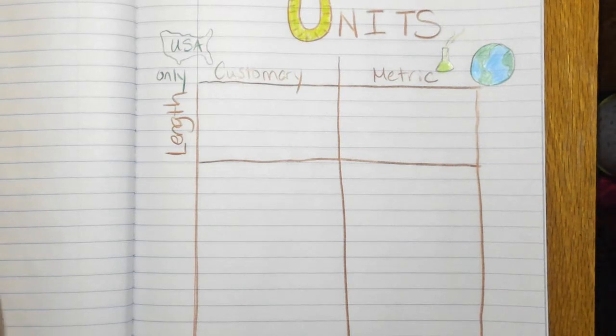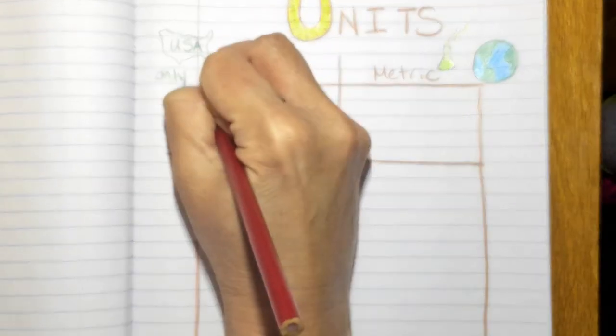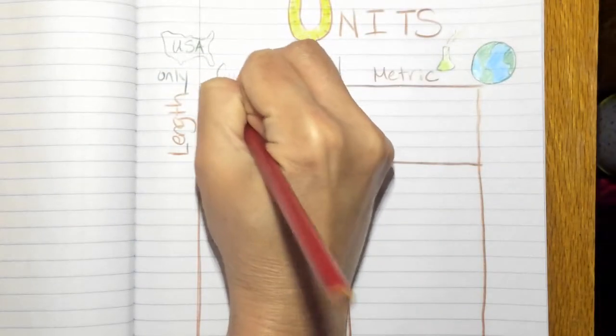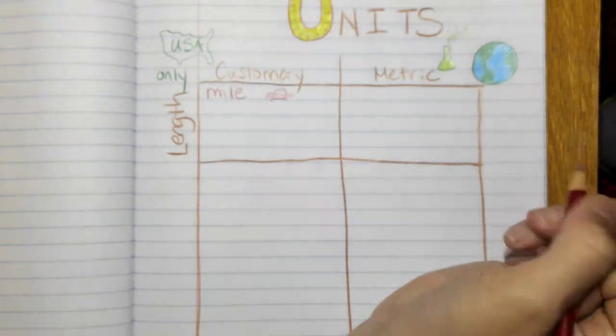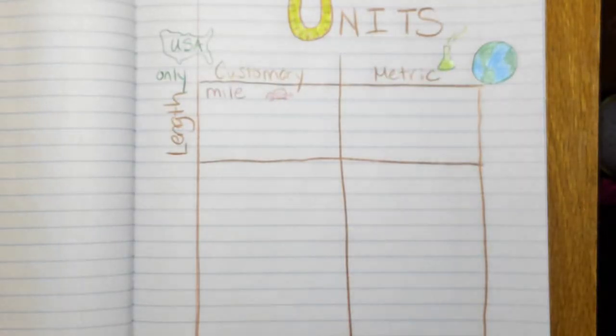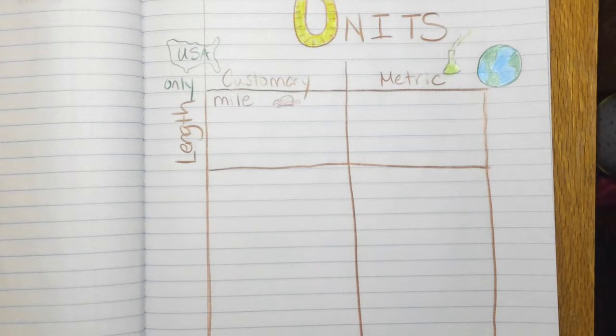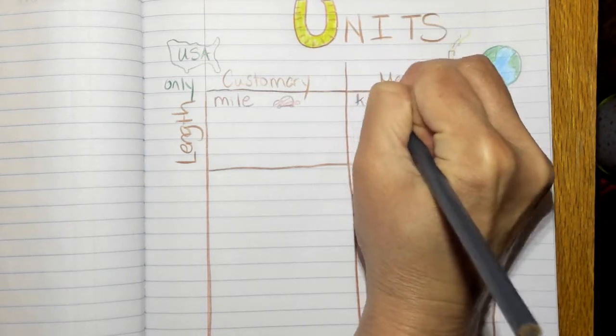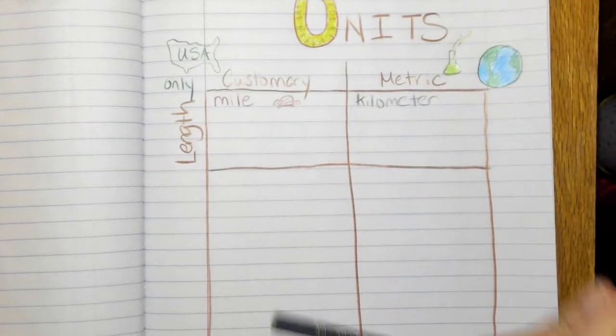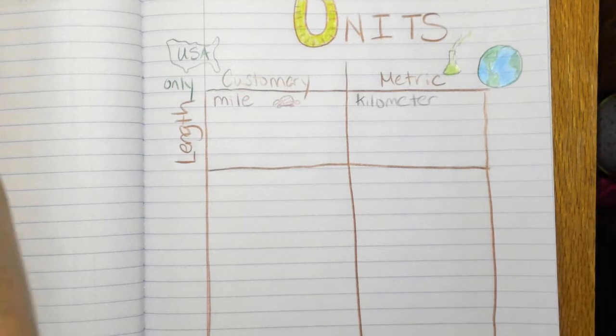So in terms of the customary units that would be a mile. I think you know like when your parents are driving places, that's usually when you talk about distances from place to place is a mile. And on the metric side you use the word kilometer, and it takes about two kilometers, a little over two kilometers, to make one mile.